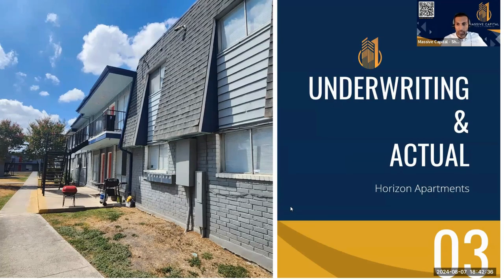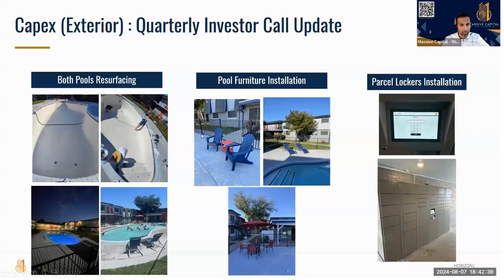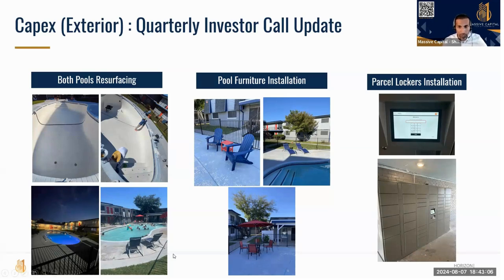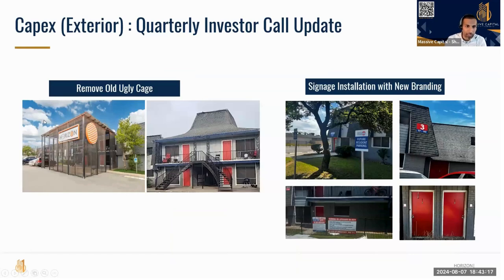For capex exterior, we decided to do something bold and make a statement. First, we fixed the pool — about 20% of our tenants are Afghan families who moved here after the US pullout, they have a lot of kids, and they're rock-solid on-time paying tenants who keep the property clean. They really appreciated the pool being fixed. We also put in Amazon parcel lockers since there are a lot of families and Amazon deliveries. We removed an old cage-fight structure that had turned into an MMA-looking fixture.